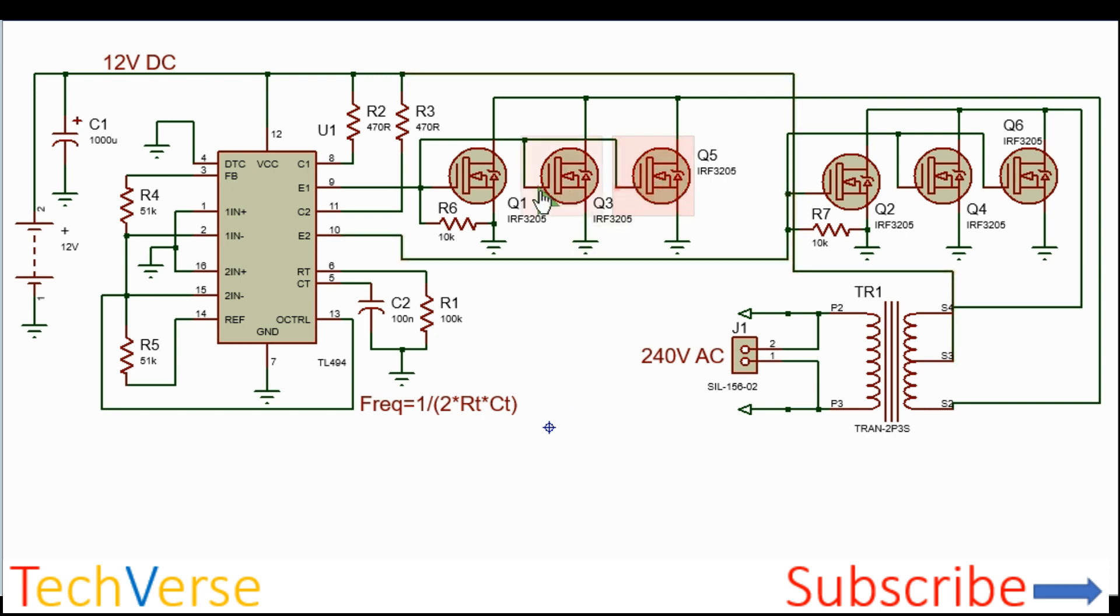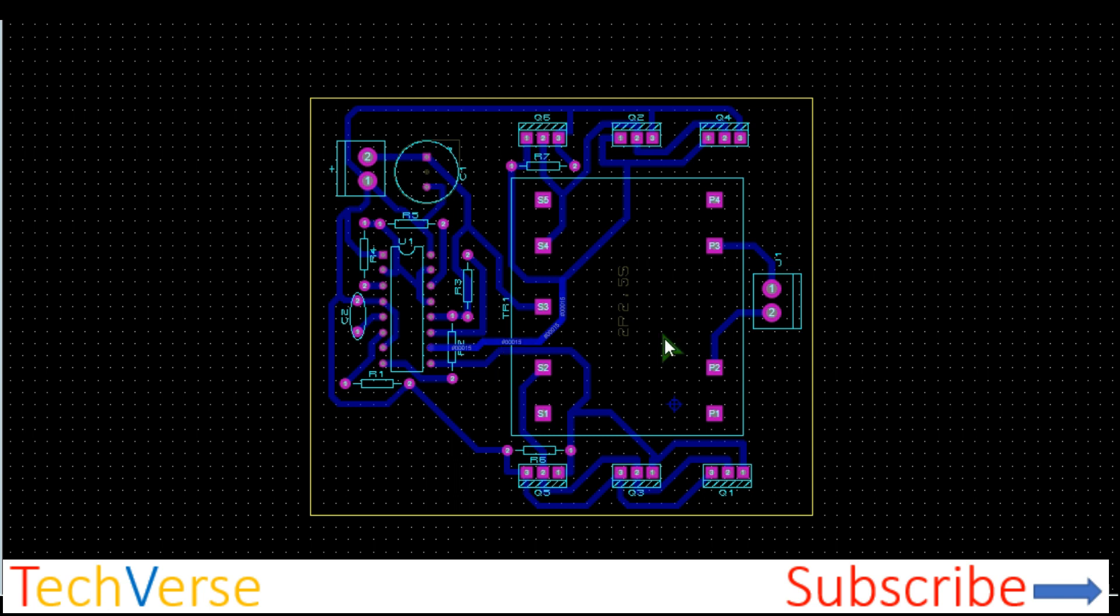So on each side, you will need to parallel three of these MOSFETs. So the circuit is as shown here. The PCB is really interesting. As shown, you can see that there's just a small board area for its power. So here you have your 12 volts. Here you have your 240 volts output.